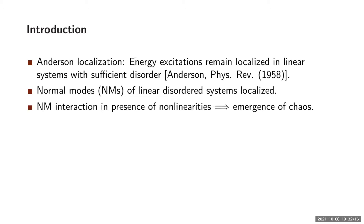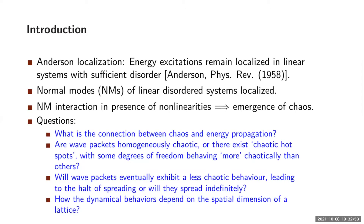There is the common phenomenon of Anderson localization, where energy excitations are localized for linear systems once we have sufficient disorder. The explanation is that the normal modes in this case are localized. But once we have non-linearities, there is an emergence of chaos. Questions to ask about this topic include the connection between chaos and energy propagation, and the concentration of chaoticity in a wave packet. And after some time, do we have the chaos reducing or do we have a crossover into regular dynamics?